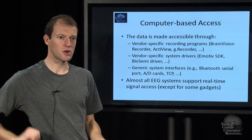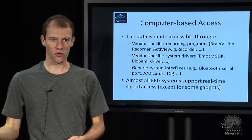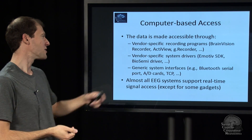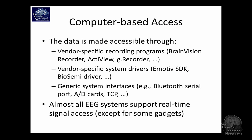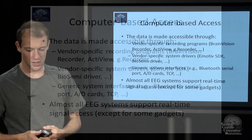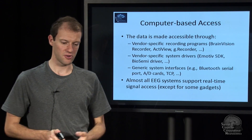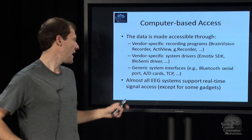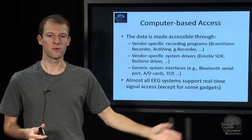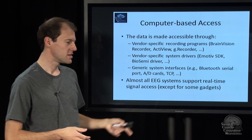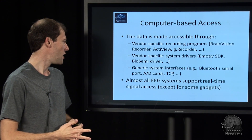After sampling and digitizing, you need to get the data to your program, which is usually mundane computer technology. You have vendor-specific recording programs like Brain Vision Recorder, ActiView, GTEC Recorder, and so on. Sometimes there are drivers, like the Emotiv SDK with its dongle. More modern wireless headsets use generic interfaces like Bluetooth, and other systems have a server with TCP network connections. That is usually the smallest problem if you know how to program or have the right tools.